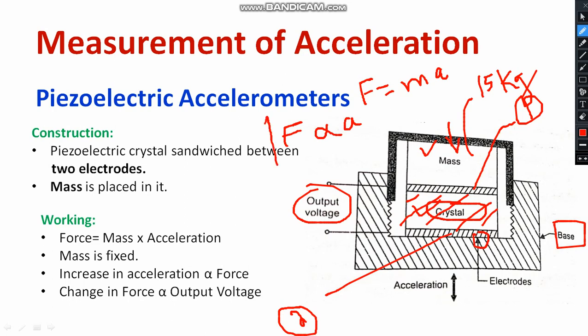As the force increases, the acceleration also will be increased. If the acceleration is very high, obviously the output voltage also will be very much high — both are directly proportional. Force is proportional to acceleration, then acceleration is directly proportional to voltage. Increasing acceleration will definitely increase the force, and the change in force will lead to the increase in voltage.